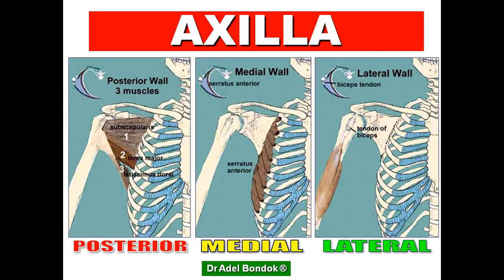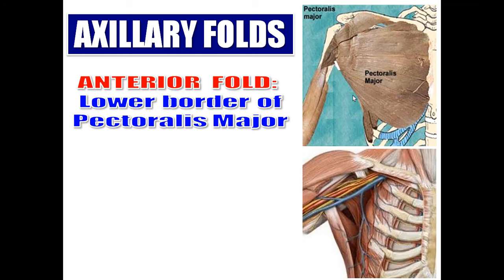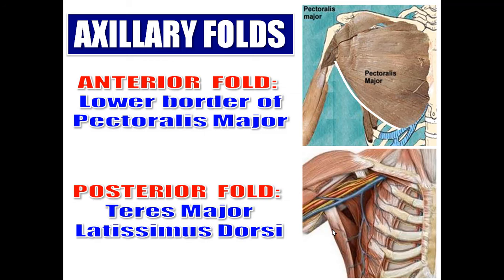The lateral wall is formed of the bicipital groove of the humerus and three muscles: the long head of biceps, short head of biceps, and coracobrachialis. Regarding axillary folds: the anterior fold is formed by the lower border of pectoralis major. The posterior fold is formed by the lower border of teres major and latissimus dorsi. The posterior fold is lower than the anterior fold; therefore, the lower limit of the axilla is the posterior fold.